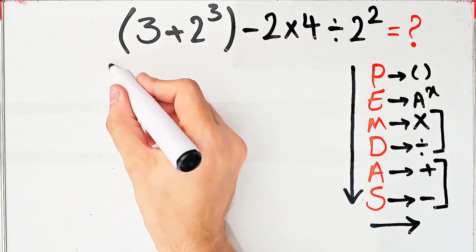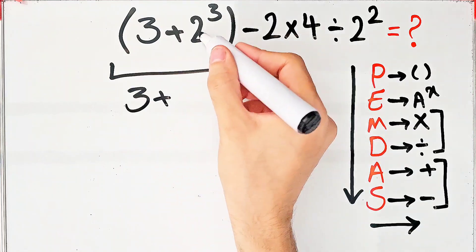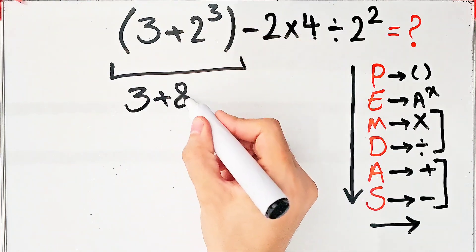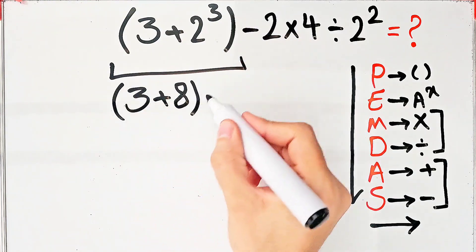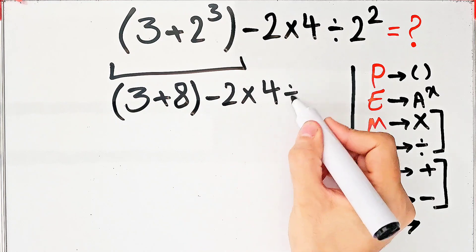We have 3 plus 2 to the power of 3, which equals 8. We have 3 plus 8 inside the parentheses, and the question is 3 plus 8 minus 2 times 4 then divided by 2 to the power of 2.